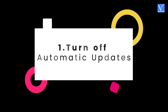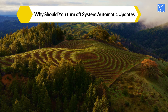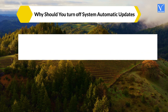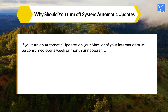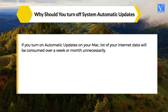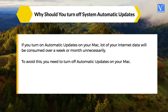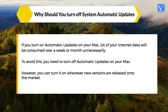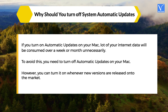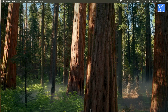The first tip is to turn off system automatic updates. We will see why you should turn off system automatic updates. If you turn on automatic updates on your Mac, a lot of your internet data will be consumed over a week or month unnecessarily. To avoid this, you need to turn off automatic updates on your Mac. However, you can turn it on whenever new versions are released onto the market. Now, follow the steps to turn off automatic updates on your Mac.